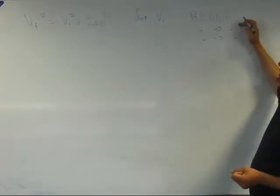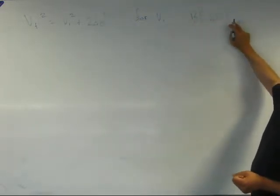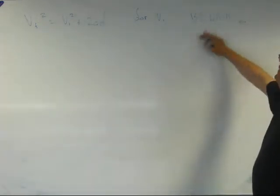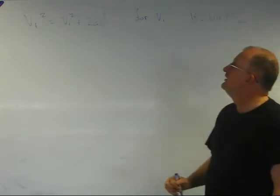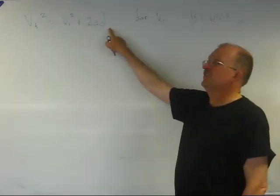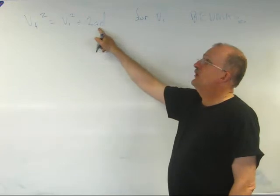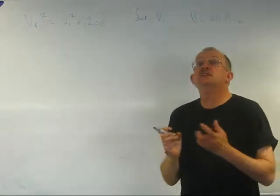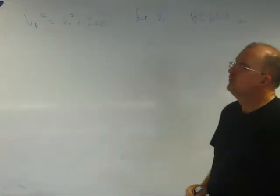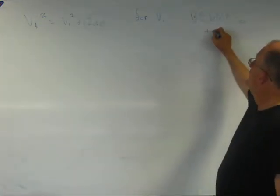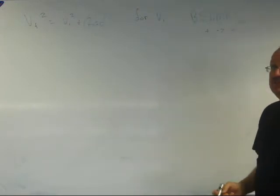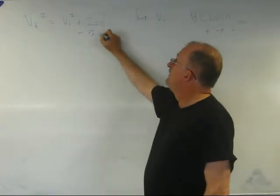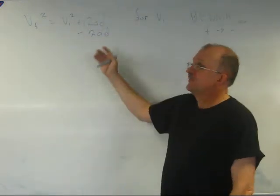So is there anything subtracting from Vi? No. Is there anything adding to Vi? Yes, all of this: 2ad. We treat that as a blob. It works as one unit. What's the opposite of addition? Subtraction. So I'm going to subtract that blob from the right-hand side.